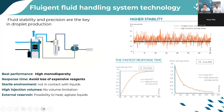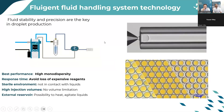This precise control allows us to produce highly monodisperse emulsions. In double emulsion, it also allows control of the shell thickness by precisely playing with the flow rates of the core phase and the shell phase — it is always a balance between the core and the shell phase flow rates.